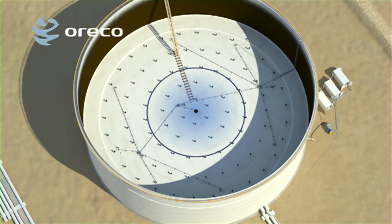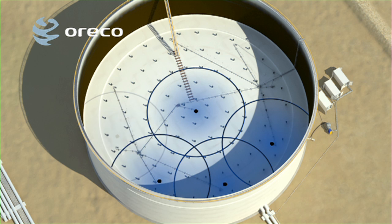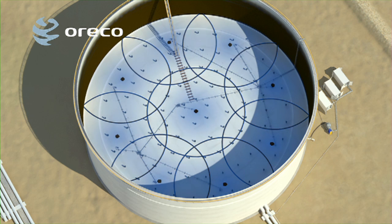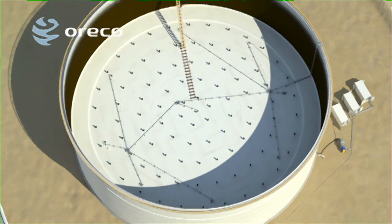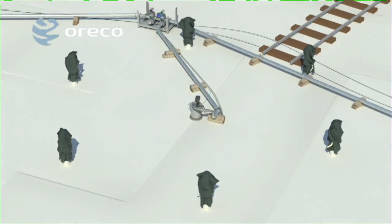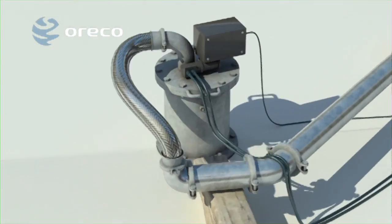Depending on the tank diameter, the required number of nozzles is installed in the roof, either through existing openings or new, cold-tapped openings securely made with the certified Oroco safe tap tool.